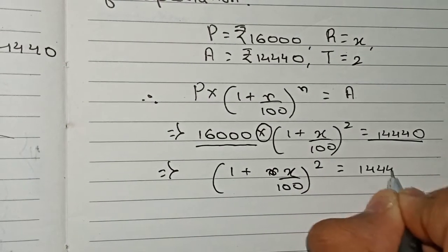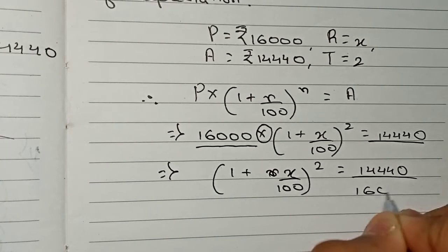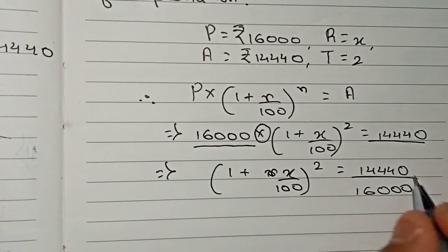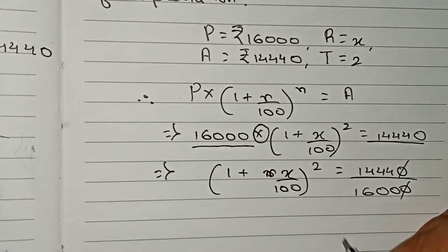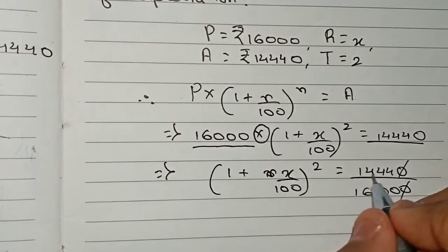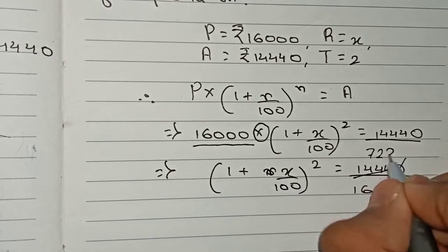Now you simplify by dividing by 2. First 7,220 and here it becomes 800, and here it becomes 361 and here it becomes 400.